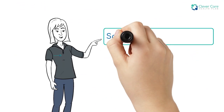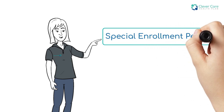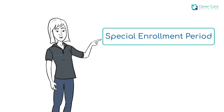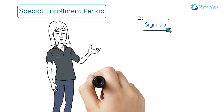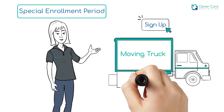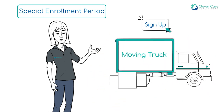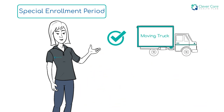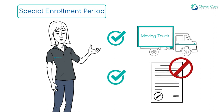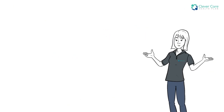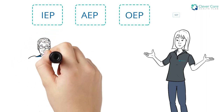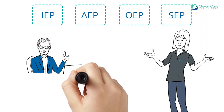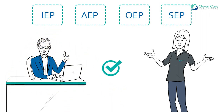Special Enrollment Periods, or SEPs, are available year-round. You can sign up only in specific situations, such as if you recently moved, are newly eligible for Medicare, or your current plan is terminated. Being informed of Medicare's enrollment periods can help you be prepared when making important decisions about your health care.